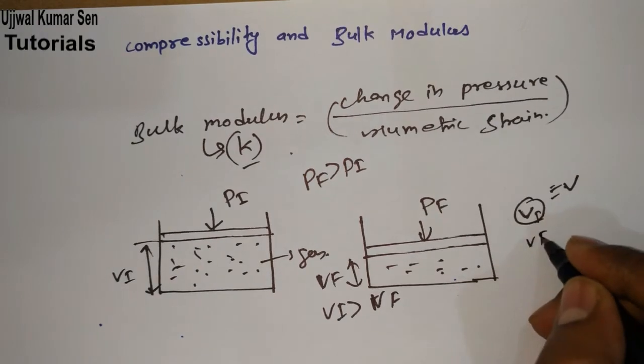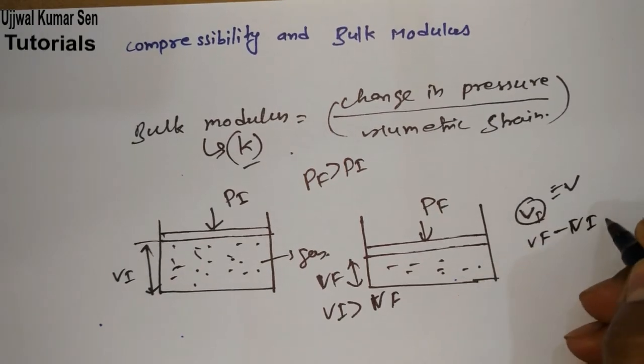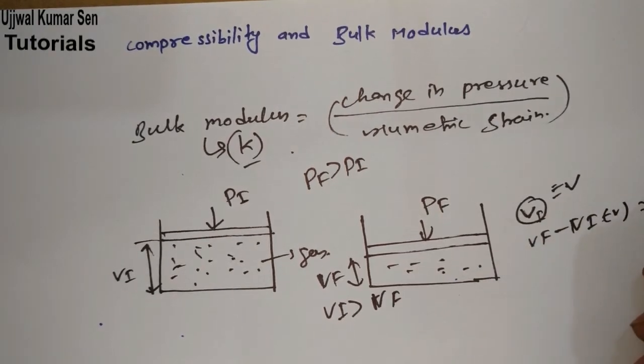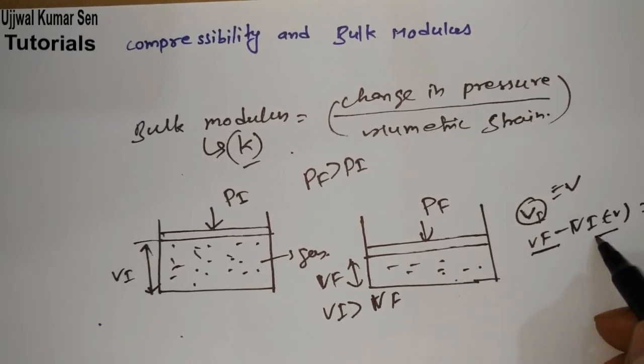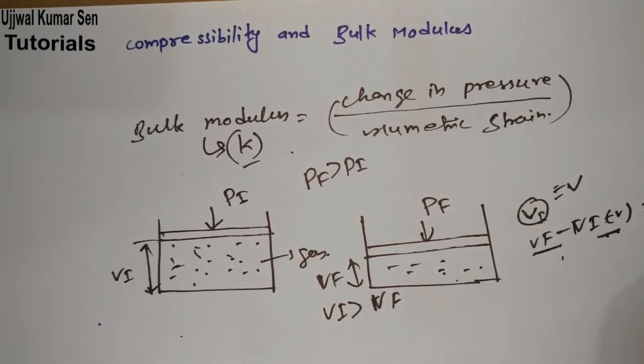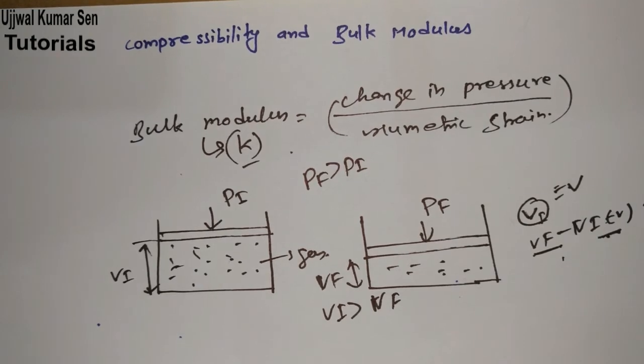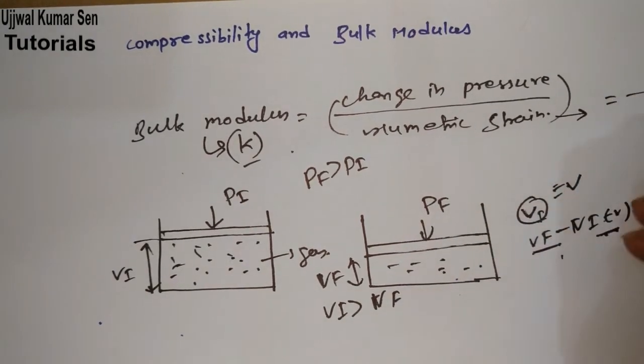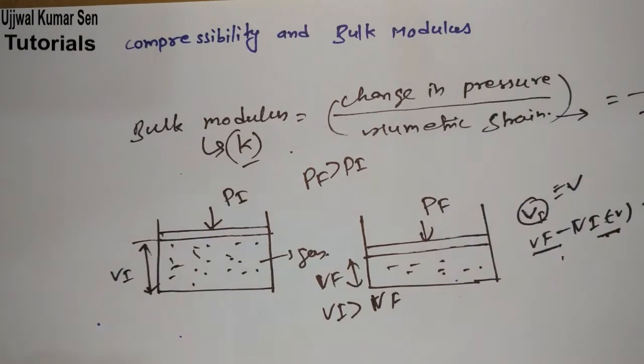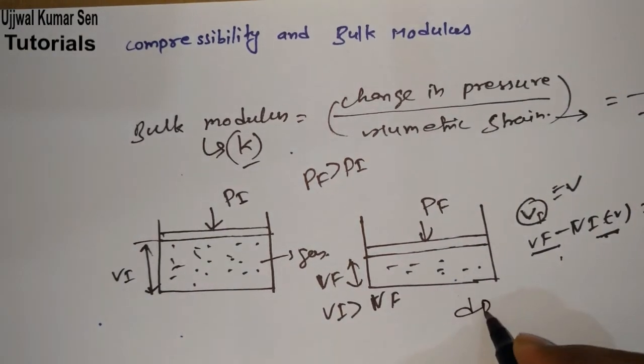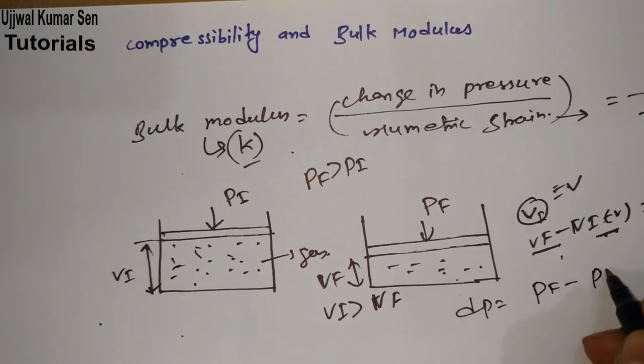Let's say original volume is V. We got Vi equals V. Change in volume Vf minus Vi or V is equal to minus dV because this is small, this is big, so small minus big equals minus dV. Now volumetric strain will be minus dV upon V.